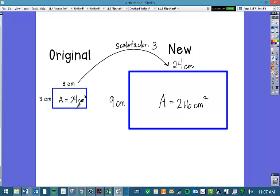So what happens, we take 216 and divide it by 24, it's 9. So I'm actually multiplying my area by 9. 24 times 9 gives me 216. So what's the relationship between my scale factor that I multiplied my side by versus 9 when I multiplied my area by? 3 squared is 9.